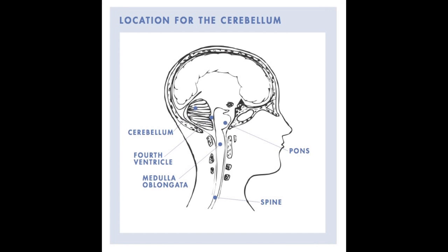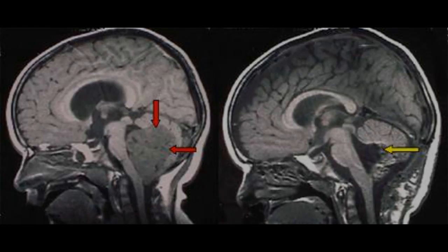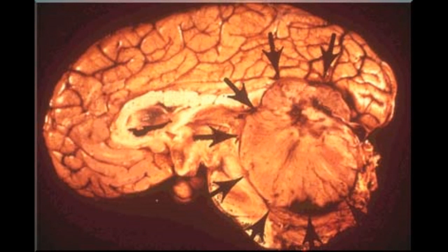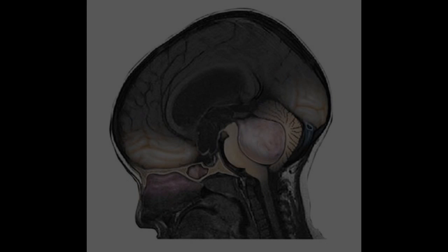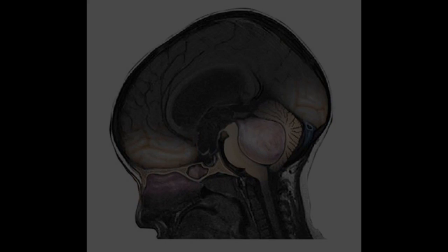Medulloblastoma tumors are formed from cells that develop poorly during the early stage of life. They are found mainly in children and are more common in boys than girls. They are malignant tumors that develop in the cerebellum and spread to other regions of the brain. Symptoms include vomiting, headaches, vision problems, problems with walking and speech including slurred words, jerky eye movements, neck stiffness, and muscle weakness. Medulloblastoma tumors account for 1.8% of all tumors.